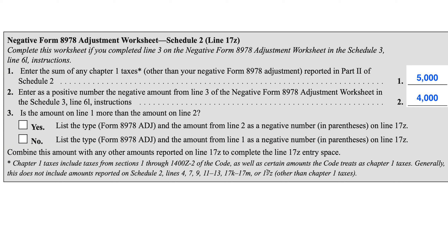Line 17N covers look-back interest from IRS Form 8697 or 8866. Line 17O covers non-effectively connected income for non-resident aliens. Lines 17P and Q reference IRS Form 8621, interest from either Line 16 or Line 24.